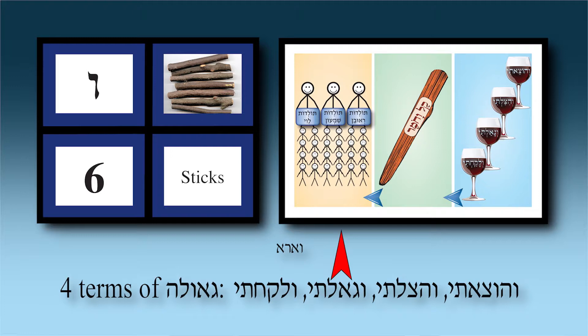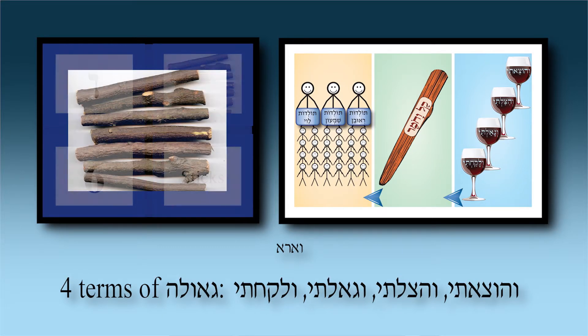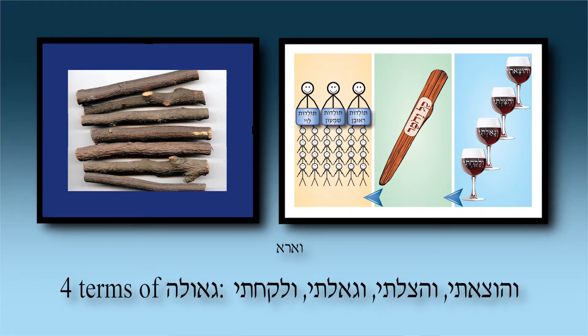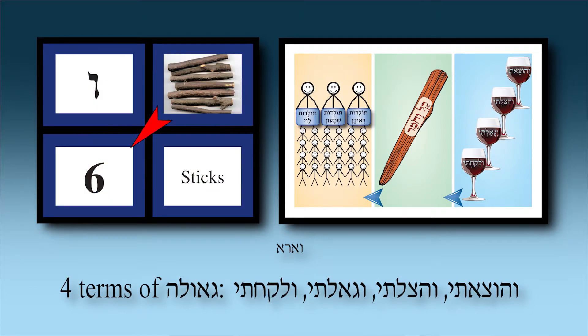So for chapter six sticks: imagine six sticks — on four of them are balanced four cups of wine. The fifth stick has 'Kal V'chomer' written on it. The sixth stick has a family tree hanging from it of ReShiLei — Reuven, Shimon, Levi. Six sticks — that's chapter six, and that's already Parashat Va'era.